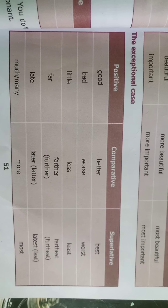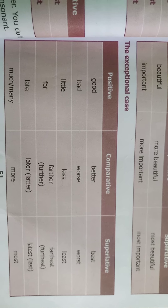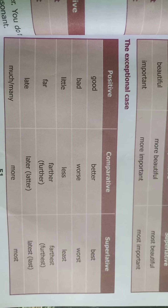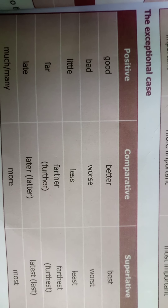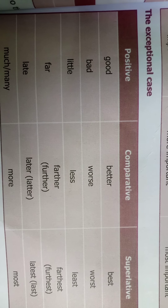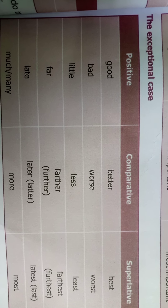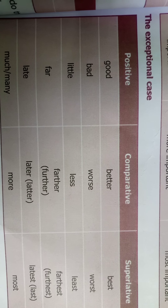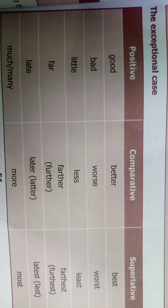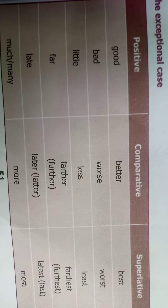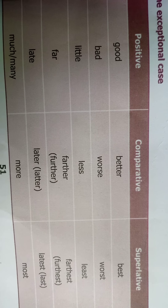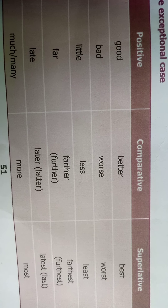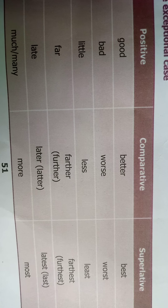We have some exceptional cases — these are irregular adjectives. There is no rule to change these forms. Look at some examples: good, better, best; bad, worse, worst; little, less, least; far, further, furthest; late, later, latest.